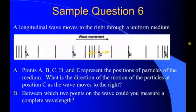Between which two points on the wave could you measure a complete wavelength? Well, I could measure a complete wavelength by taking the same point on two consecutive waves. In this case, that must be between point A and point C. Those look like the same point on consecutive waves. So, that would be our wavelength between A and C.